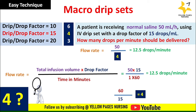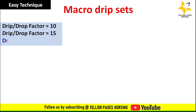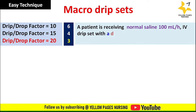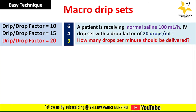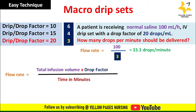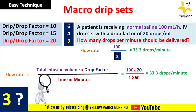One more example: a patient is receiving normal saline 100 ml per hour using an IV set with a drip factor of 20 drops per ml. How many drops per minute should be delivered? Flow rate = 100 ÷ 3 = 33.3 drops per minute. Applying the regular formula gives the same answer. The number 3 was obtained by dividing 60 minutes by drop factor 20.